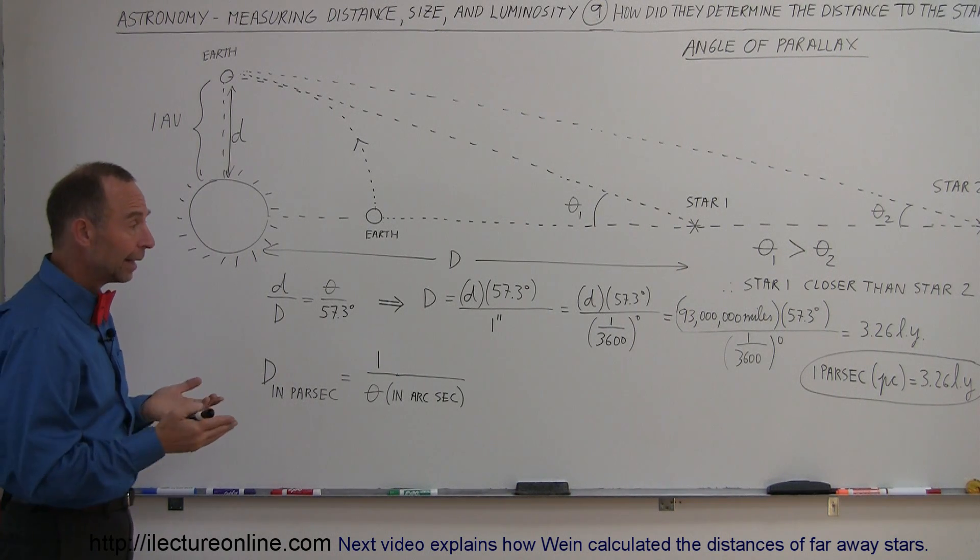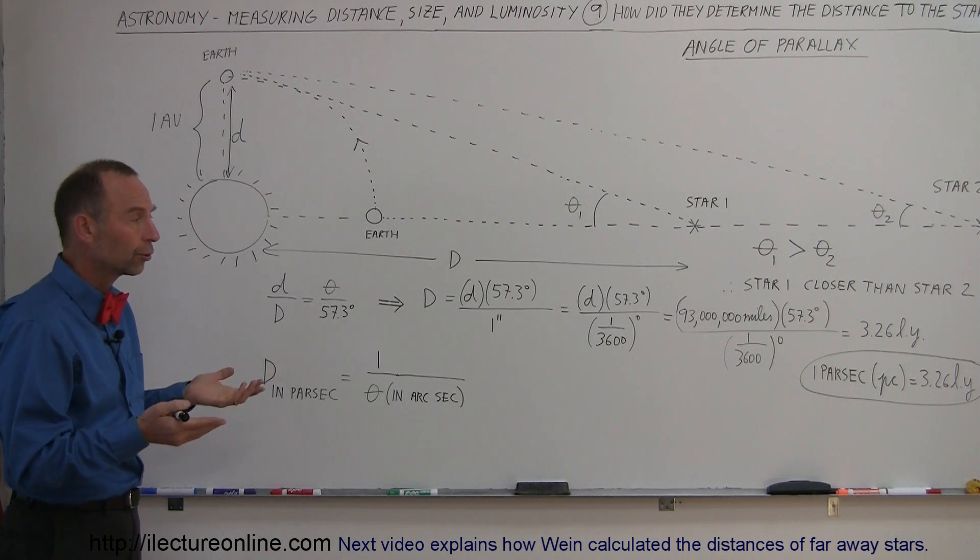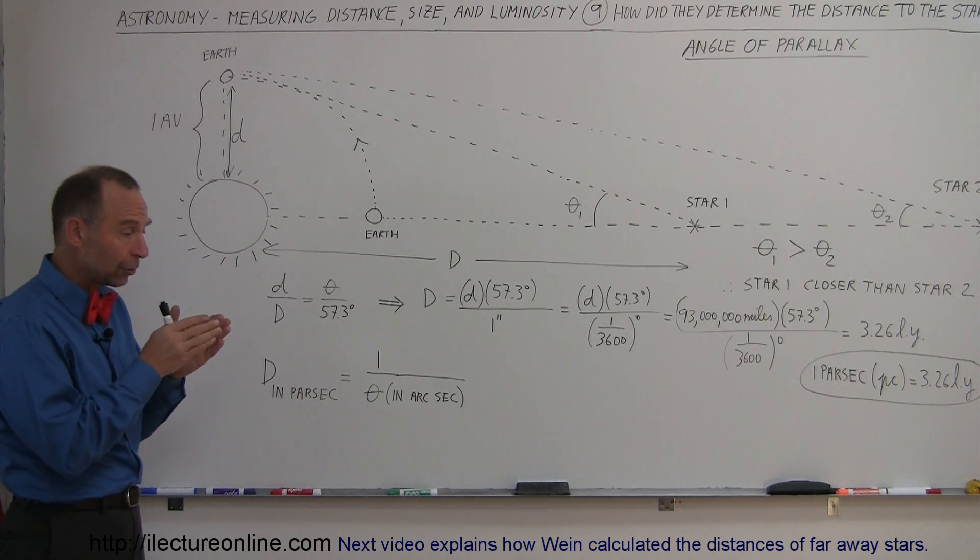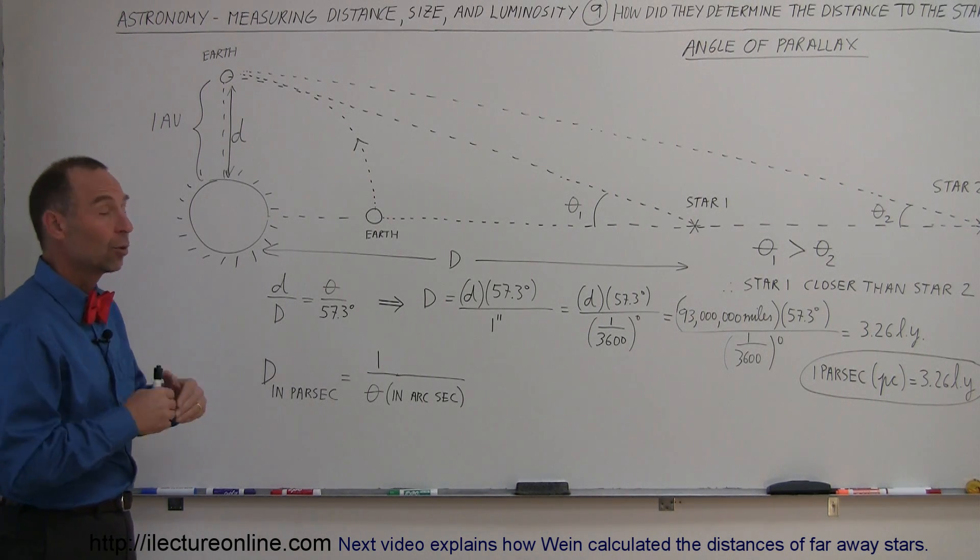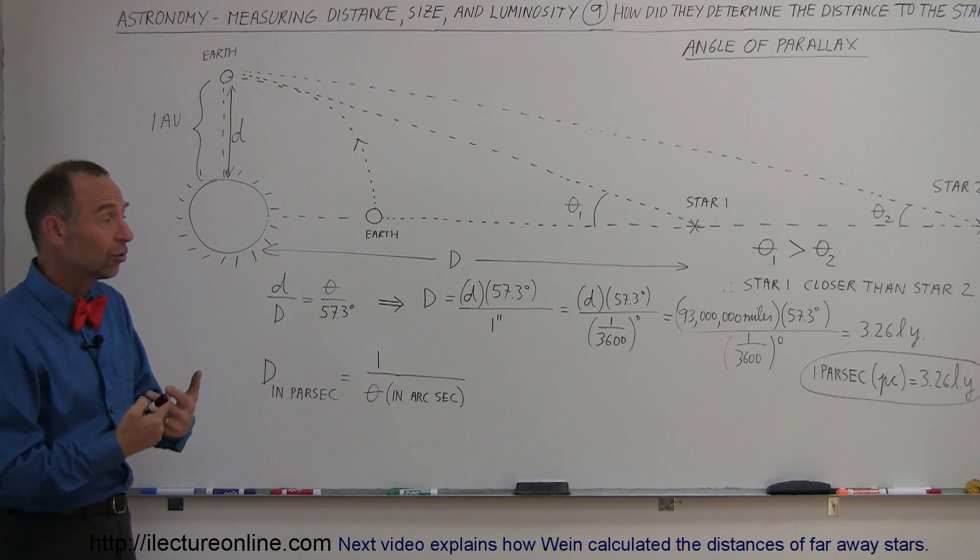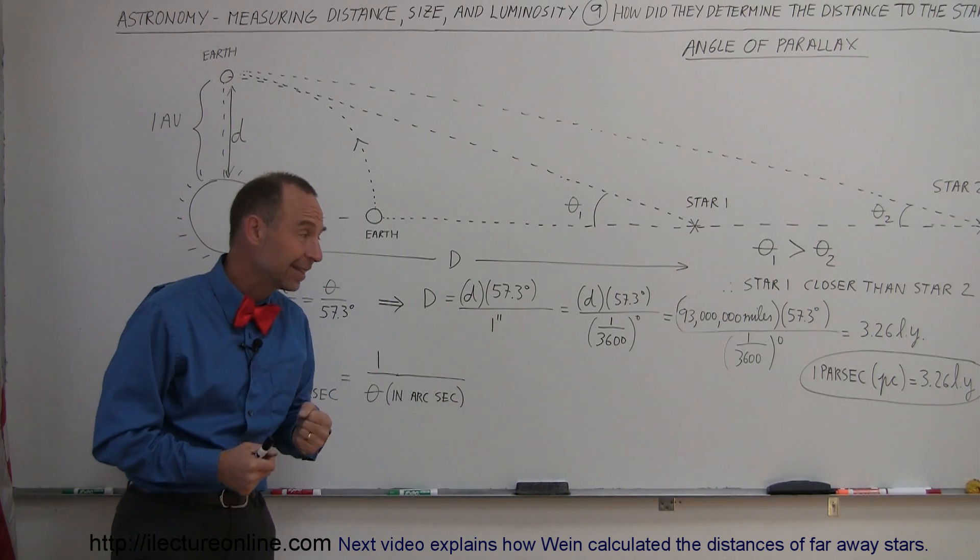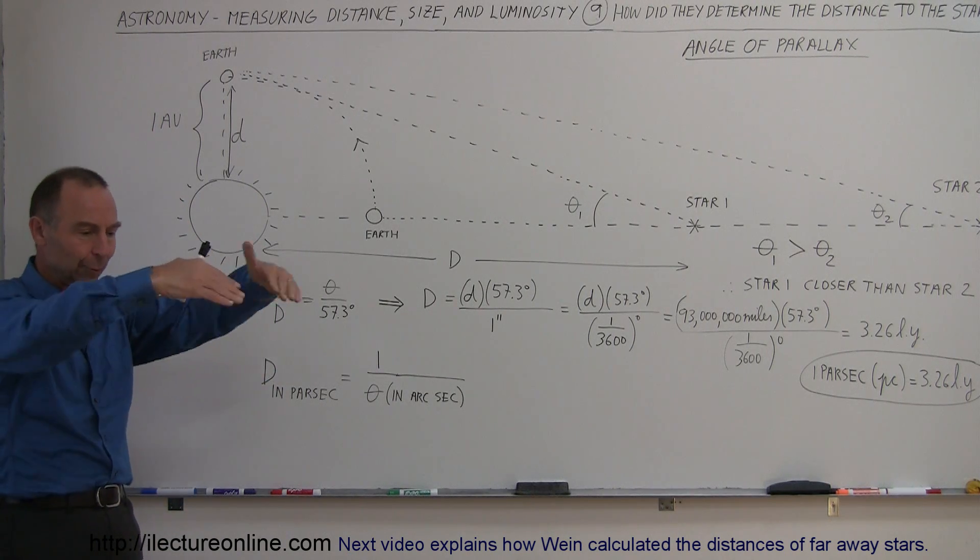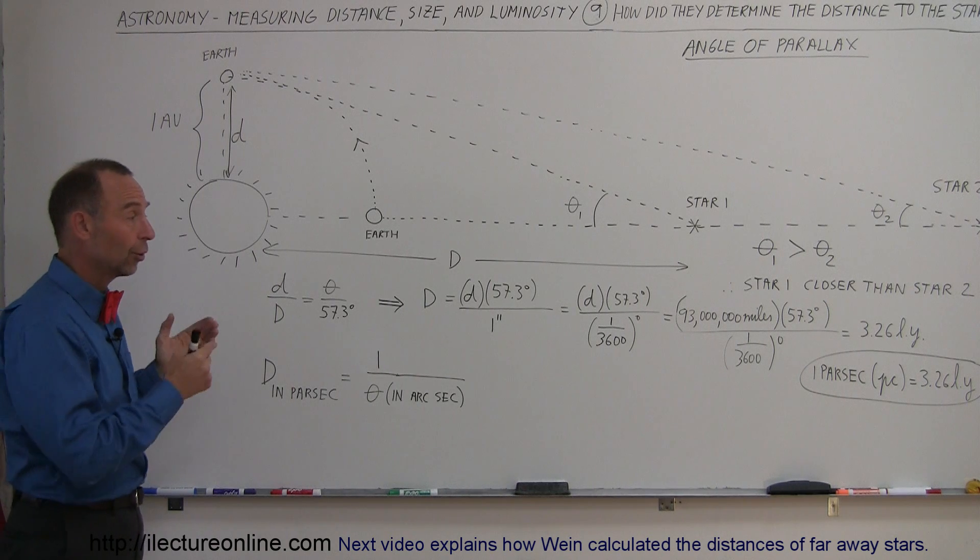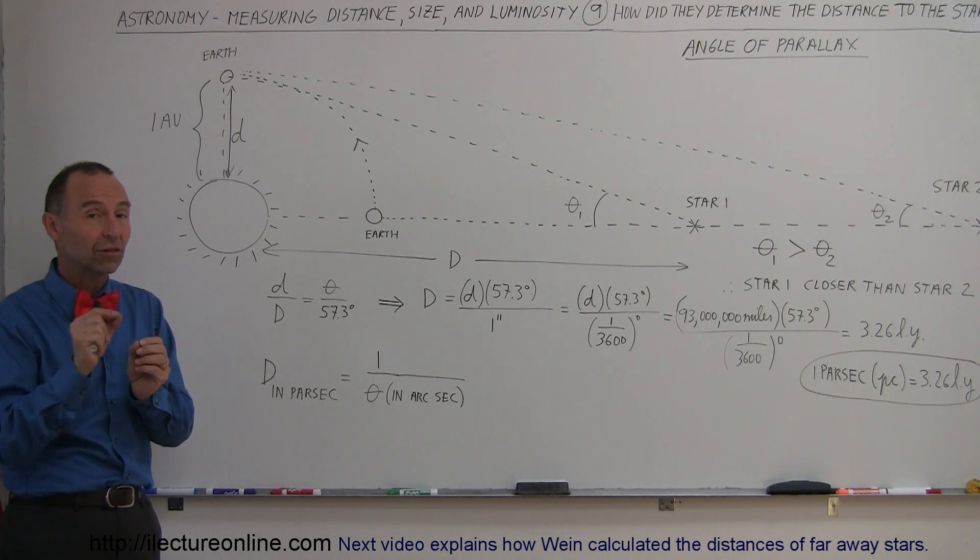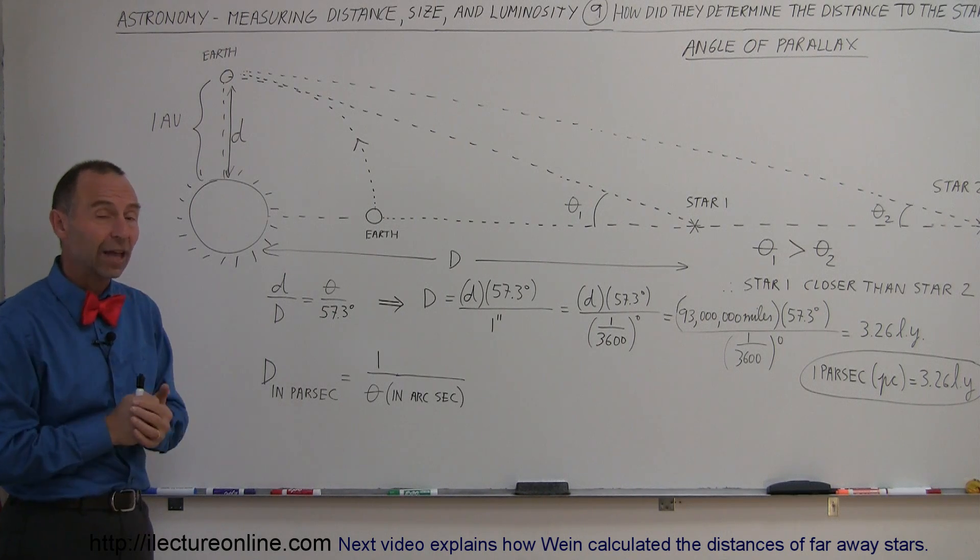But it turned out that in recent modern history, for example 100 years ago or so, they were beginning to be able to take angle measurements as small as one fifth of an arc second, which meant that they could start measuring distances of stars as far away as about 5 parsecs, or about 16 light years. And it turns out, within a radius of about 16 light years, there are about a hundred stars. And so, at that time, they were able to measure the distance to the nearest hundred stars or so using this method, using this angle of parallax.